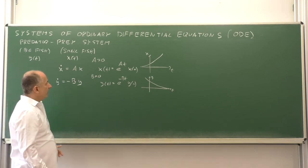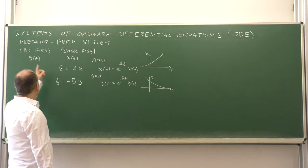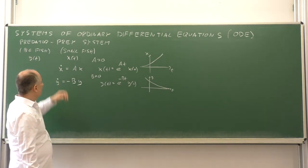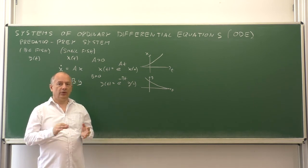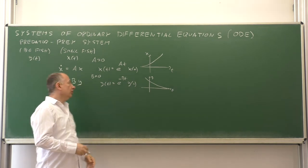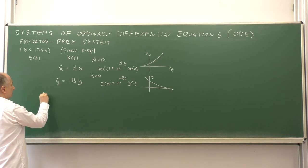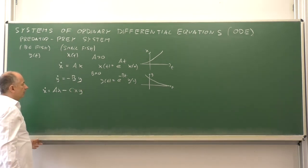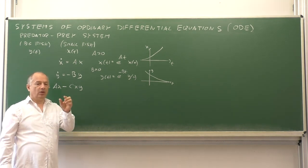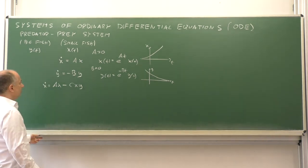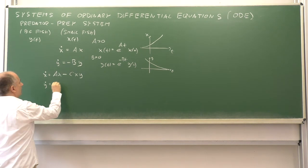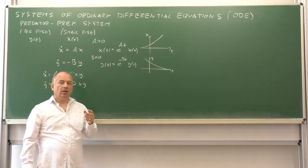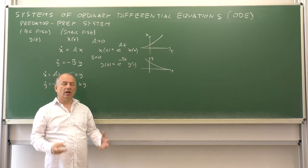Now assume that in our biological system both x and y are positive and they interact, in the form that when a big fish consumes a small fish, the number of small fish decreases, but the big fish get stronger and have more children. So we can add new terms: dx/dt = ax - cxy, where the term cxy corresponds to the probability of the big fish meeting the small fish. And dy/dt = -by + dxy, because due to the interaction the predator individuals are stronger and have more children.